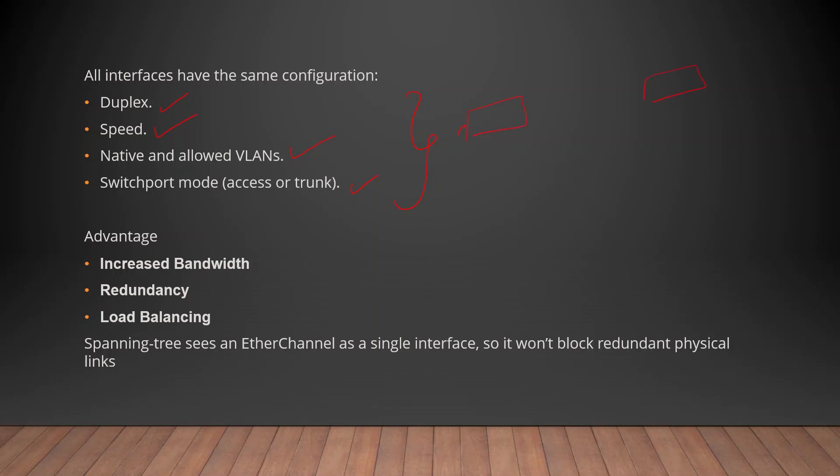This is port-wise configuration. You can use multiple ports. If you have two ports, you can use EtherChannel. For interface configuration, duplex and speed must match. We will also verify VLAN and trunk access settings.